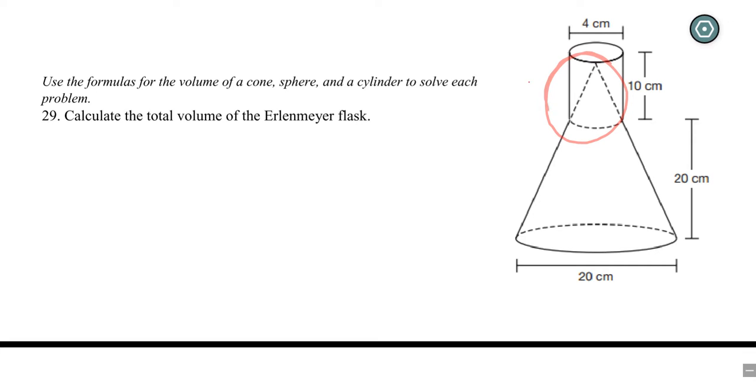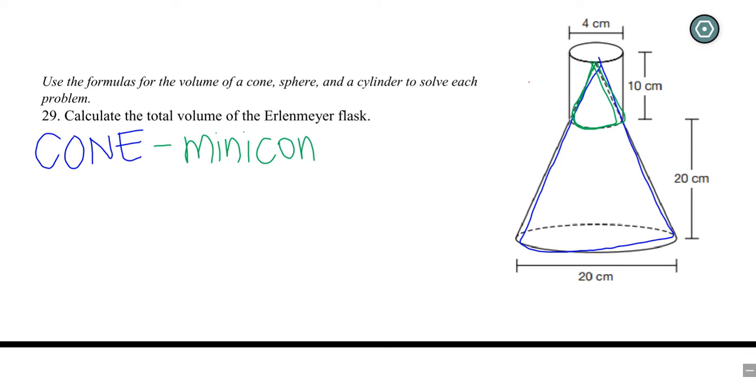But notice right here there's a mini cone that we are going to subtract out. So the whole thing we're going to do is find the cone, so the big cone that's right here, and then we need to subtract this mini cone off of it because we don't want that anymore. So subtract the mini cone and then our last step will be to add on this cylinder.